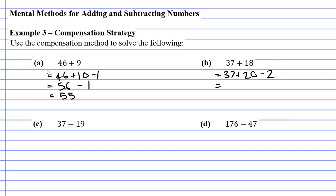And then 37 plus 20, really simple, that's 57, but I've got to minus the 2 at the end giving me 55. Same answer again.